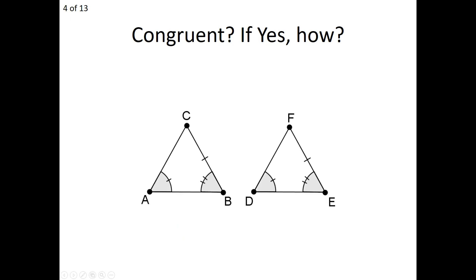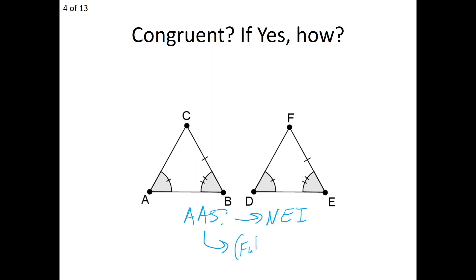Let's take a look at these two. In triangles ABC and DEF, I have angle A and D are equal, angle B and E are equal, and sides BC and EF are equal. So this one is actually angle-angle-side. Is angle-angle-side congruent? Well, as of right now we haven't proven angle-angle-side, so our answer is simply NEI — not enough information at this point in time. If we proved angle-angle-side as a theorem, then yes, we could say yes. So technically, it's a future yes — we will actually be able to prove these congruent.